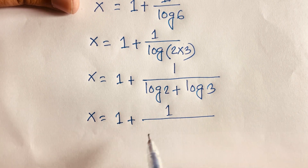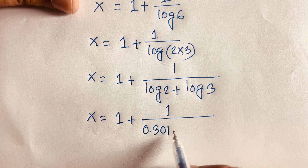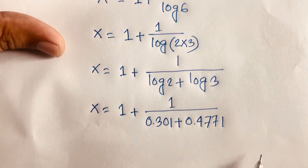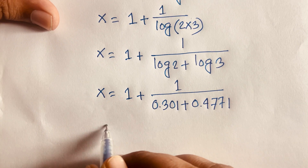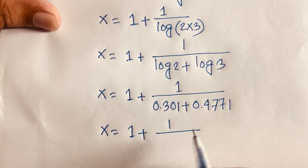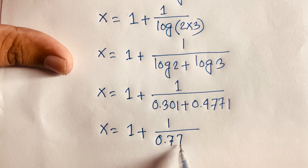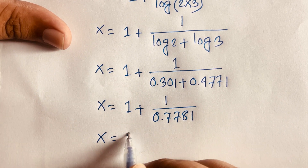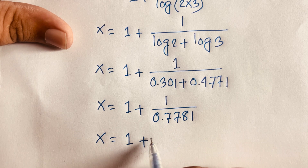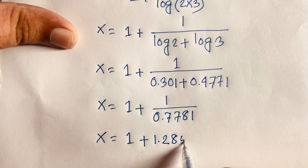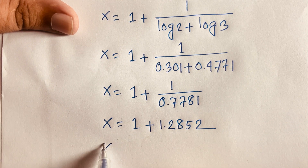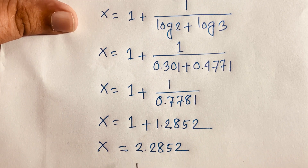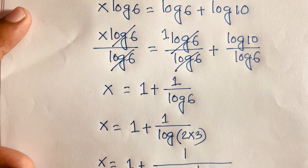Using a calculator, log 2 equals 0.301 and log 3 equals 0.4771. So x is equal to 1 plus 1 over (0.301 + 0.4771), which is 1 over 0.7781, giving approximately 1.2852. Adding 1, we get x is equal to 2.2852. This is our final answer to this exponential equation.